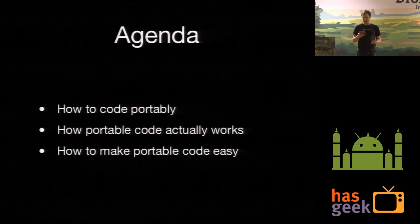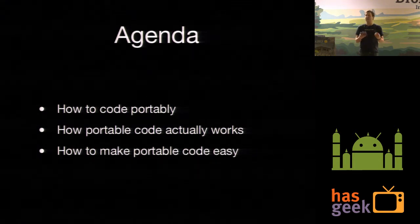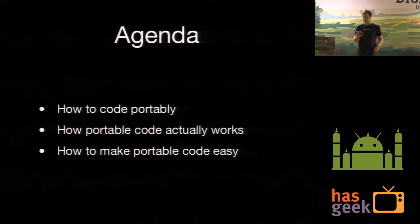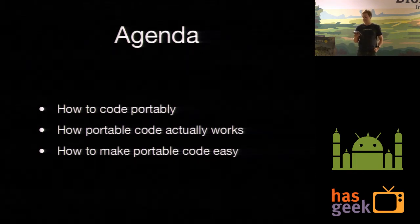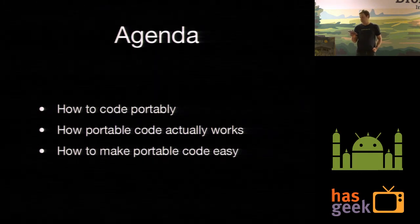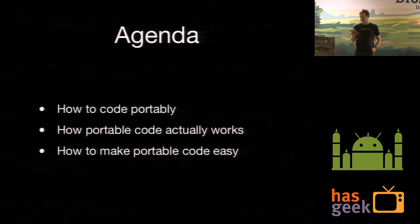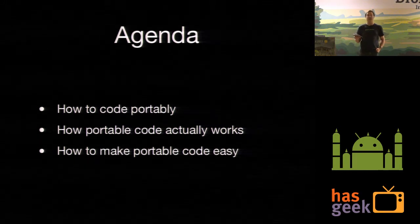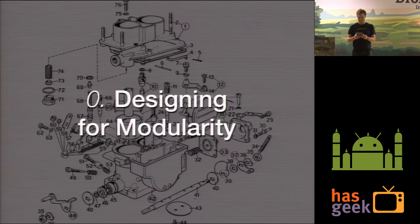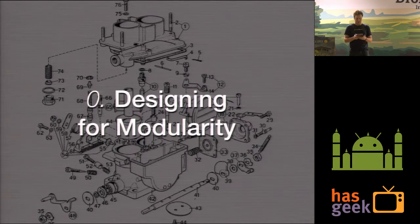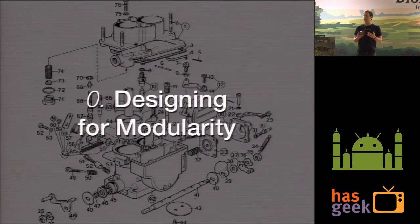We're going to cover three things. First, some engineering theory — how to think about app design to make your code portable. Then I'll show you a possible pathway to making portable code that runs on both iOS and Android. Once you have usable portable code, you can put a UI on top of it. And then we'll look at some design patterns that make designing portable code much easier. First up, we're going to talk about how to produce a modular piece of software, covering ideas that hopefully you've seen before when writing software.